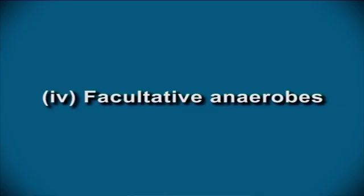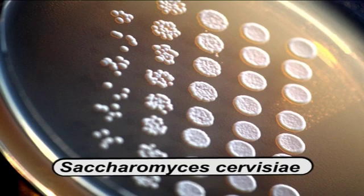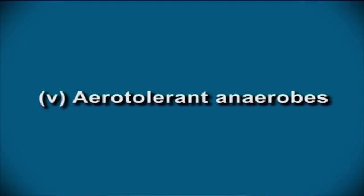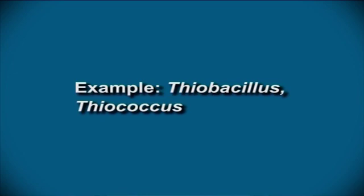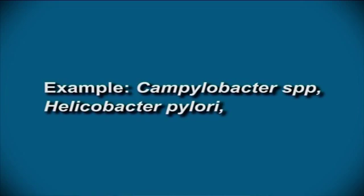Facultative anaerobes are able to grow like aerobes in the presence of oxygen but have the added facility of surviving when conditions become anaerobic. Examples include Staphylococcus species, Listeria species, and Saccharomyces cerevisiae. Aerotolerant anaerobes are basically anaerobic microorganisms not inhibited by oxygen, which they do not utilize. Examples include Thiobacillus and Thiococcus. Microaerophiles require oxygen but are only able to tolerate low concentrations of 2 to 10 percent. Examples include Campylobacter species and Helicobacter pylori.